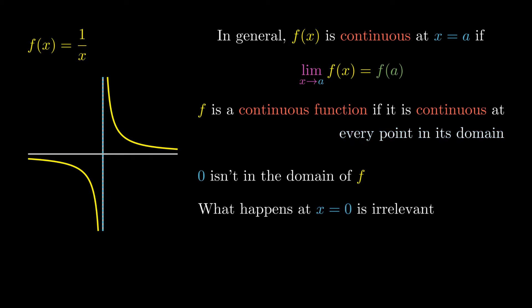So in fact, if you look on the graph, you can see that actually at every single point where the function is defined, it's changing continuously. There are no sudden jumps or anything like that. In other words, f is continuous at every point in its domain. And so it is a continuous function.